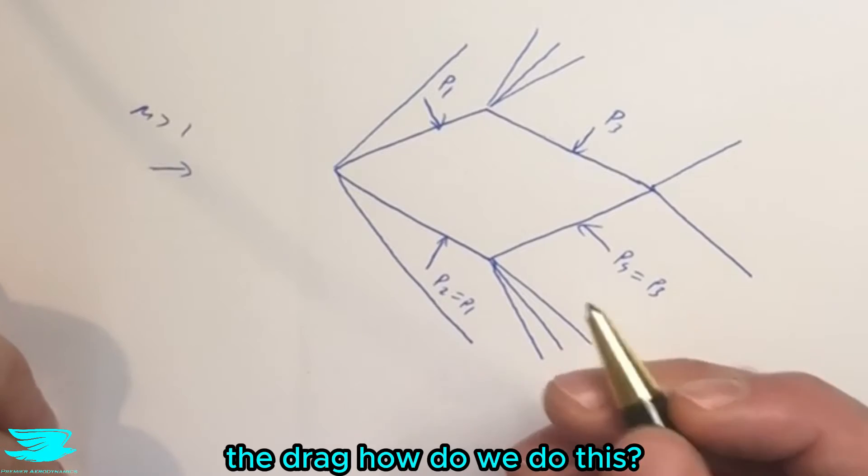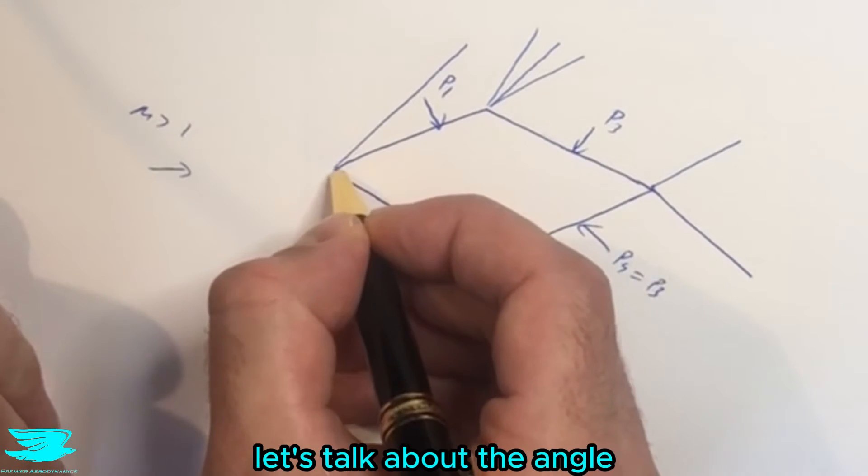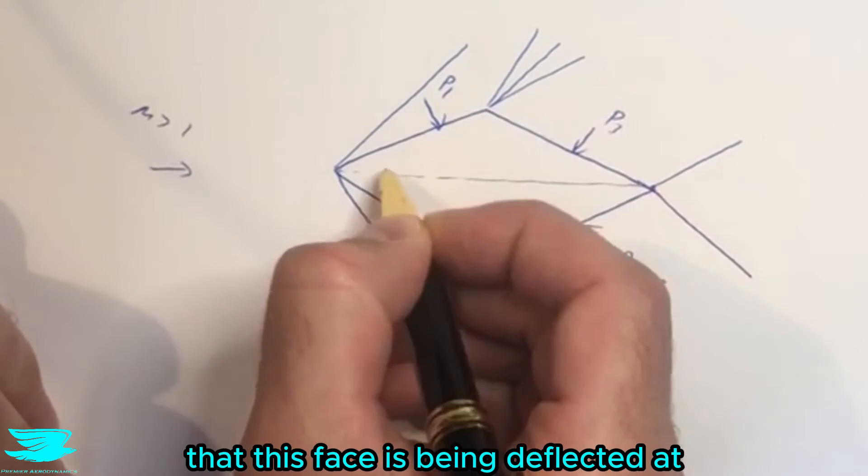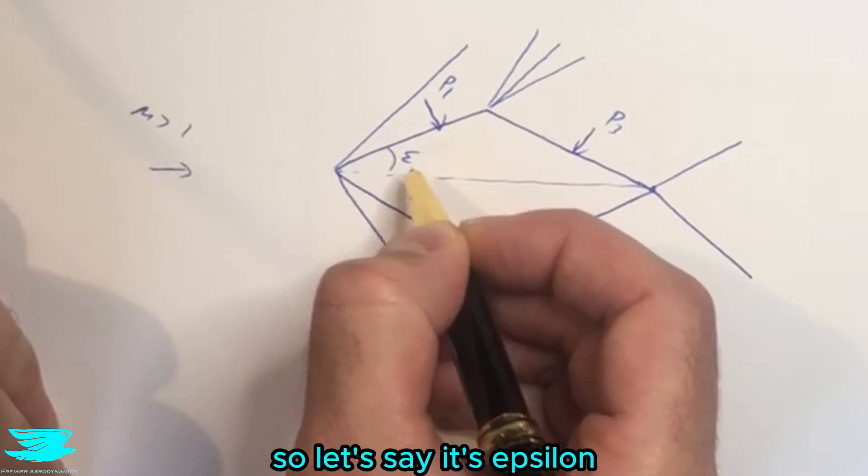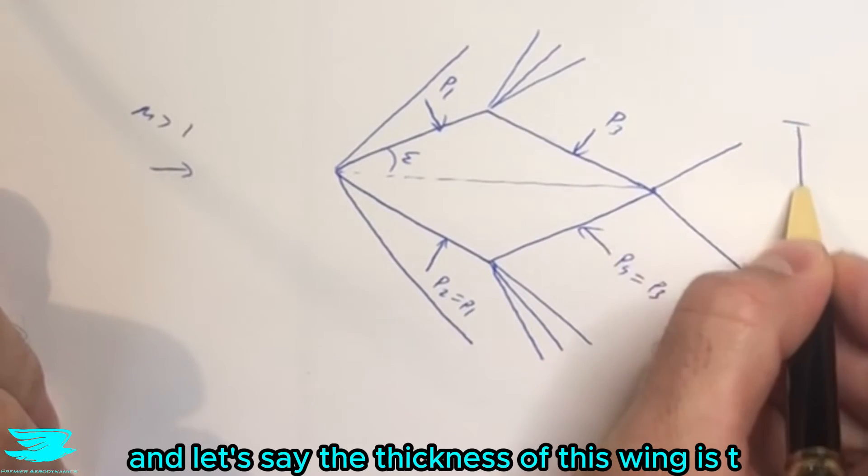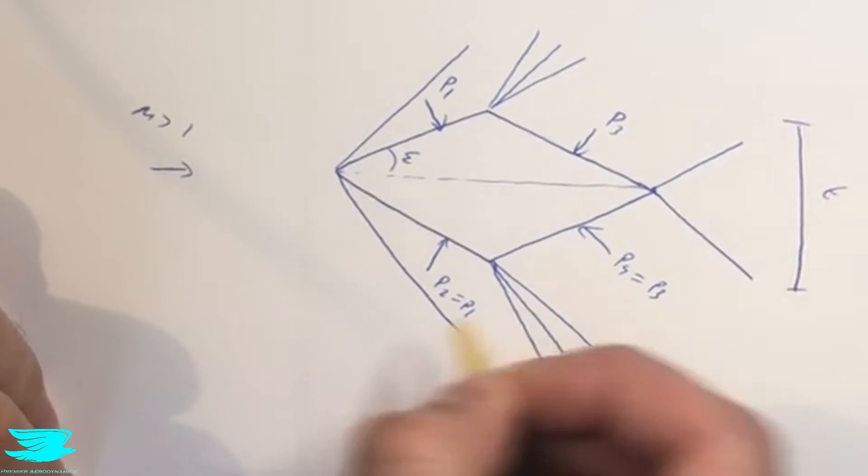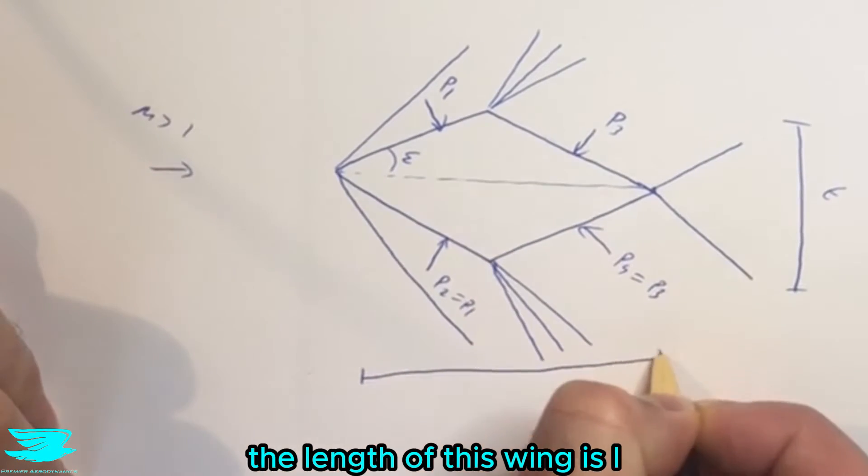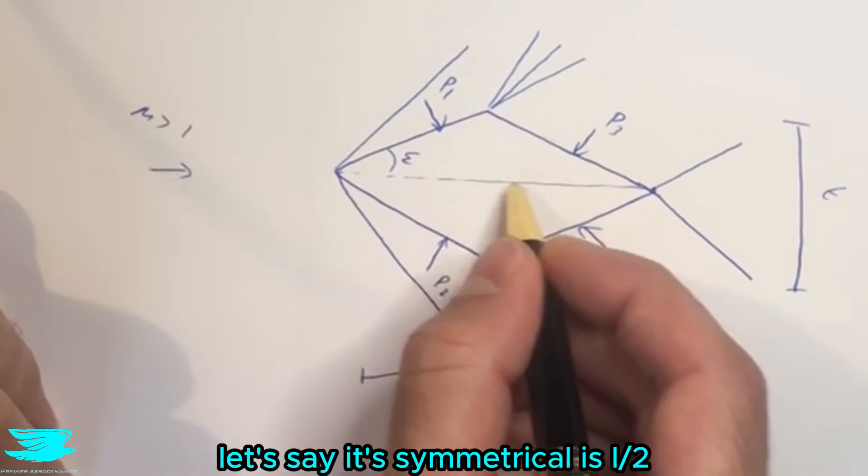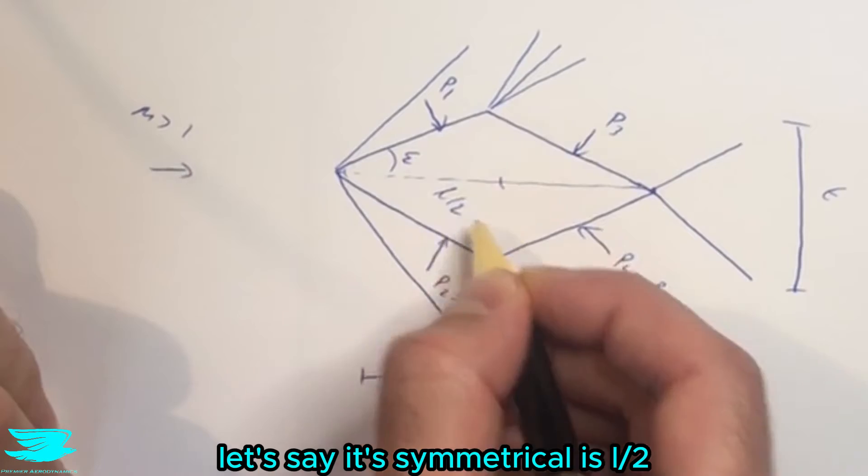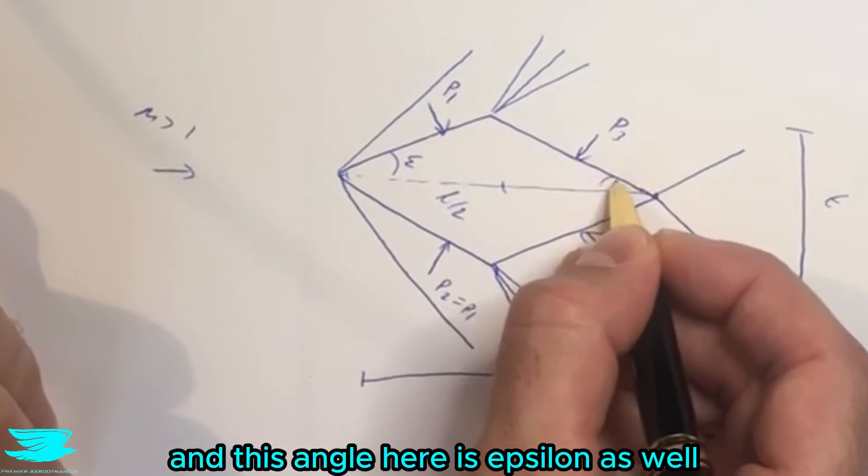So in terms of calculating the drag, how do we do this? Let's talk about the angle that this face is being deflected at. So let's say it's epsilon. And let's say the thickness of this wing is T. The length of this wing is L. So the point from here to here, let's say it's symmetrical, is L on 2. And this angle here is epsilon as well.